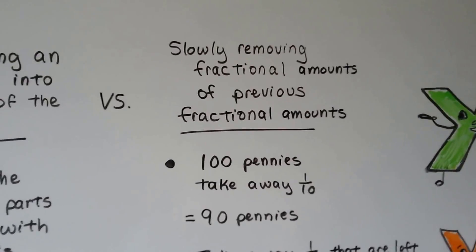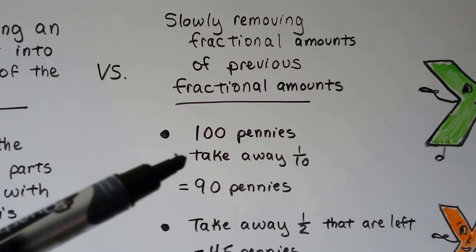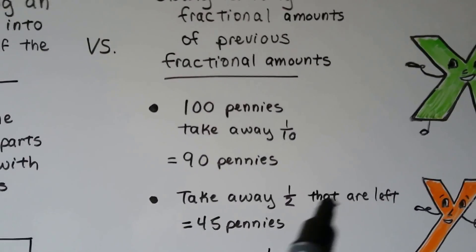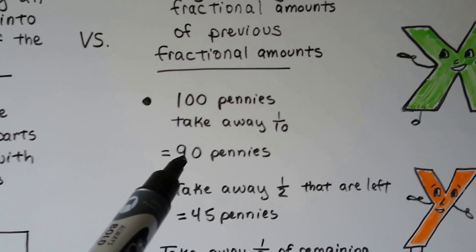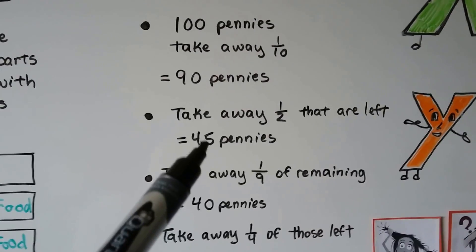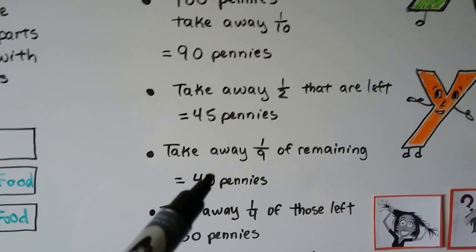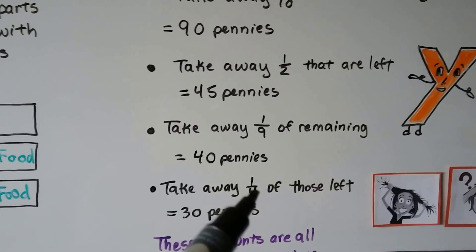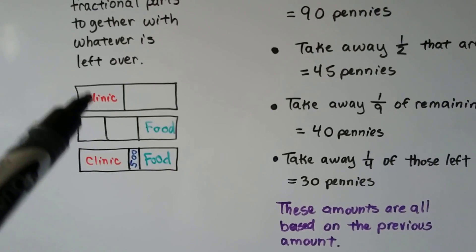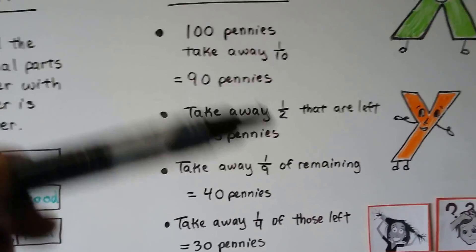Now compare that to slowly removing fractional amounts of previous fractional amounts, like a running total. If we had a hundred pennies and we take away one-tenth of them, one-tenth of a hundred is ten, so we take ten away and we have ninety pennies. Now if we take away half of the remaining, that means we're taking half of the ninety, not half of the hundred. Half of ninety is forty-five. If we take away one-ninth of the remaining forty-five — nine times five is forty-five — we take away five, and now we have forty pennies. And if we take away one-fourth of those left, one-fourth of forty is ten, we'd have thirty pennies left. So these amounts are all based on the previous amount, where the first problem wasn't — half of a total went to the clinic, one-third of the total went to the food, and then $500 was left over.